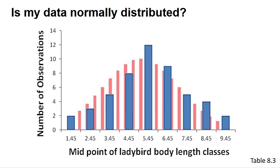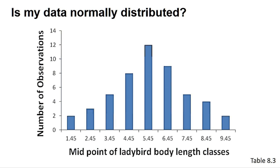This is an important consideration with these tests. They tell you if your data is not normal. What they do not do is tell you that your data is normal. What if the p-value was just above 0.05? The result would be non-significant, but could we really state the data was normally distributed with any certainty?